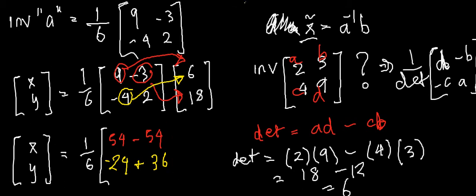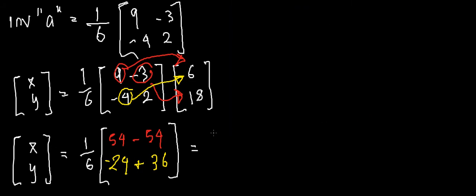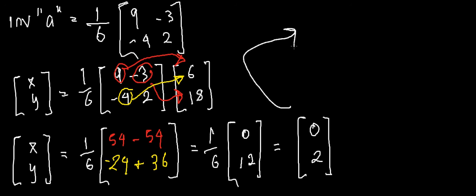So our result before the scalar is [0, 12]. When we add in the scalar 1/6 — remember scalars can just be multiplied in — we get [0/6, 12/6] which gives us [0, 2]. So our answer is x equals 0 and y equals 2.